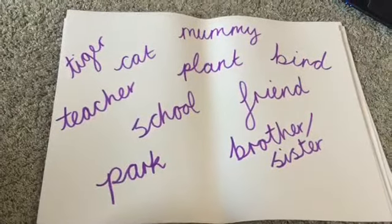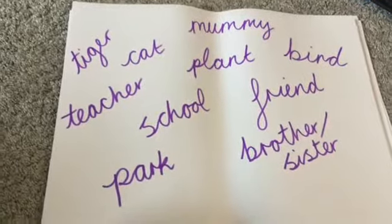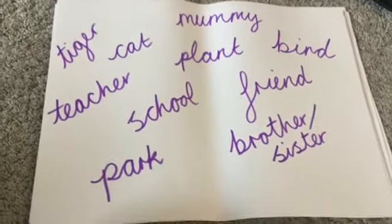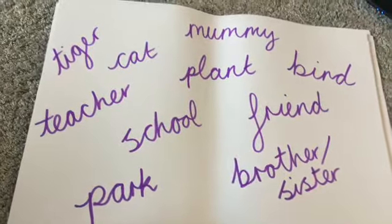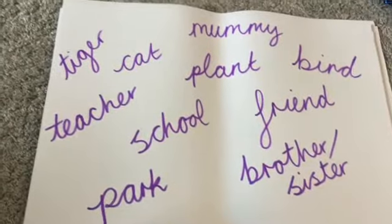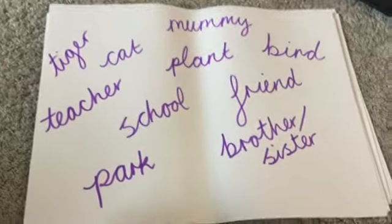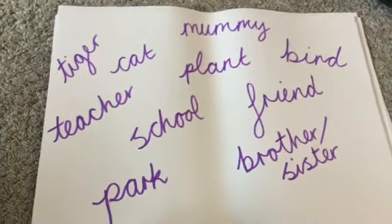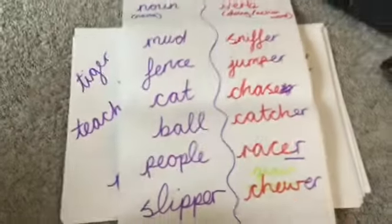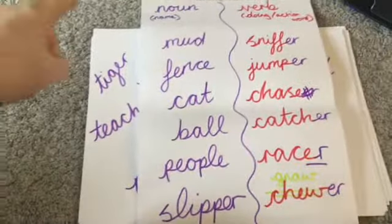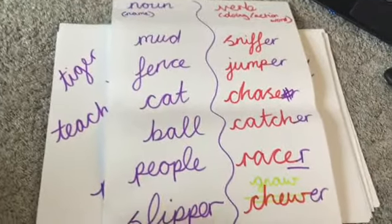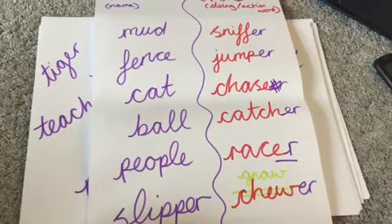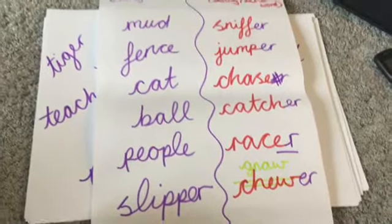I have written down some ideas for you: a tiger, a cat, a teacher, a school, a plant, a mummy, a bird, a friend, a park, or a brother and sister that you might want to write your Kennings poem about. You do not have to use one of these - these are just examples. What I would love for you to do is write your Kennings poem using the same technique, with your verbs down one side and your nouns on the other. I would love for you to send it into Teams, and we will see if we can guess what your Kennings poem is about.